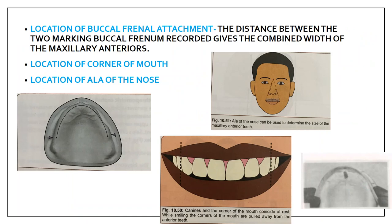The next method is the location of the buccal frenal attachment. The distance between the two buccal frena markings is recorded, and this gives the combined width of the maxillary anteriors. Another method is the location of the corner of the mouth — the canines and the corner of the mouth coincide at rest, and while smiling the corner of the mouth is pulled away from the anterior teeth. Additionally, the ala of the nose can be used to determine the size of the maxillary anterior teeth.